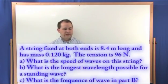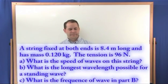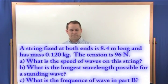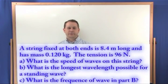The first problem says a string fixed at both ends is 8.4 meters long and has a mass of 0.120 kilograms. The tension in the string is 96 newtons.